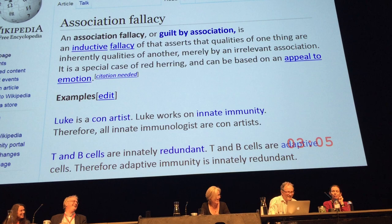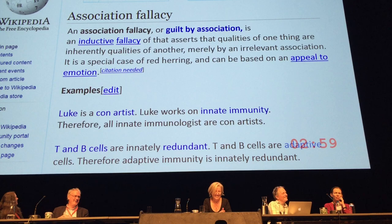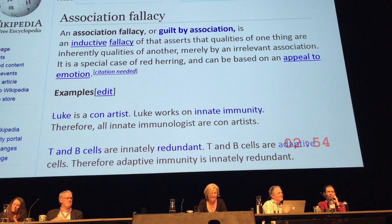They will use this logic to say that T and B cells are innately redundant. T and B cells are adaptive, and therefore all adaptive immunity is innately redundant. I'm going to show you that that's not the case.